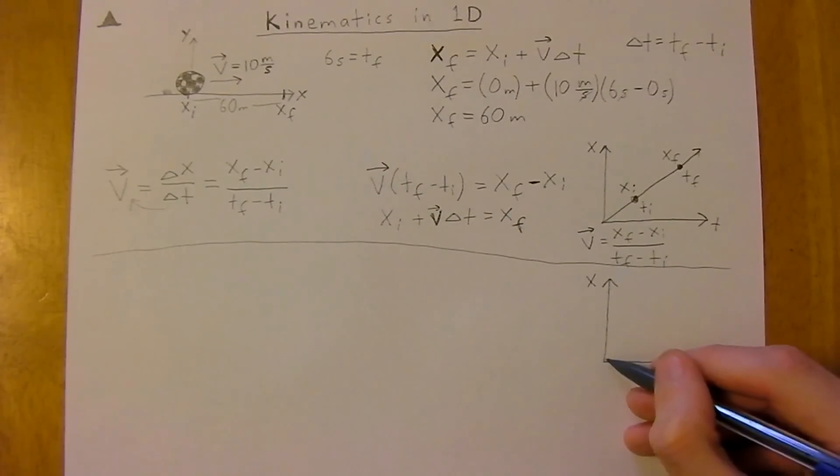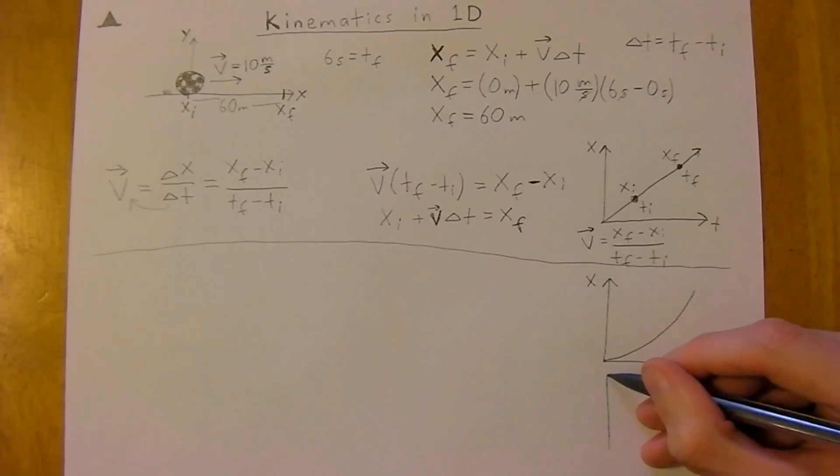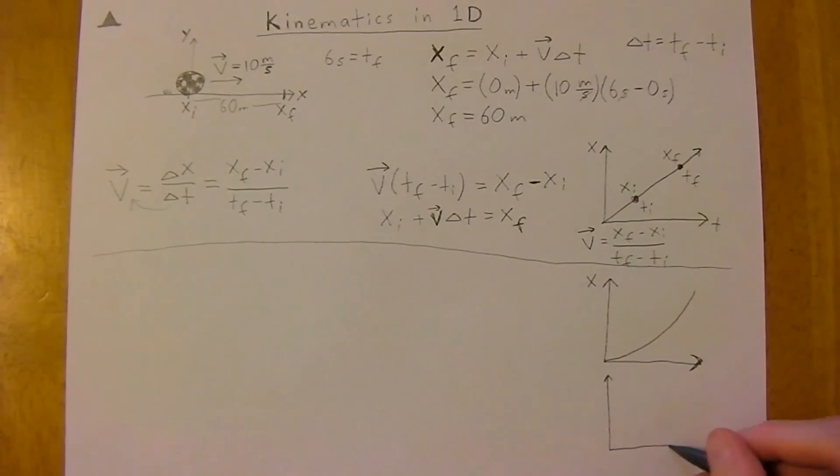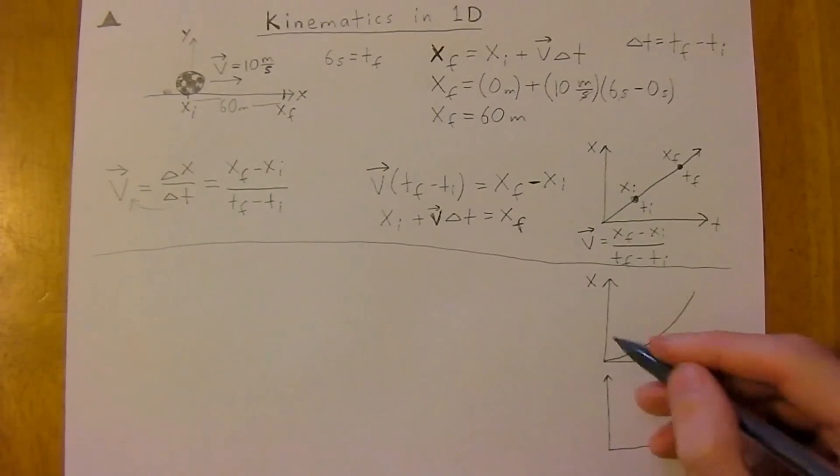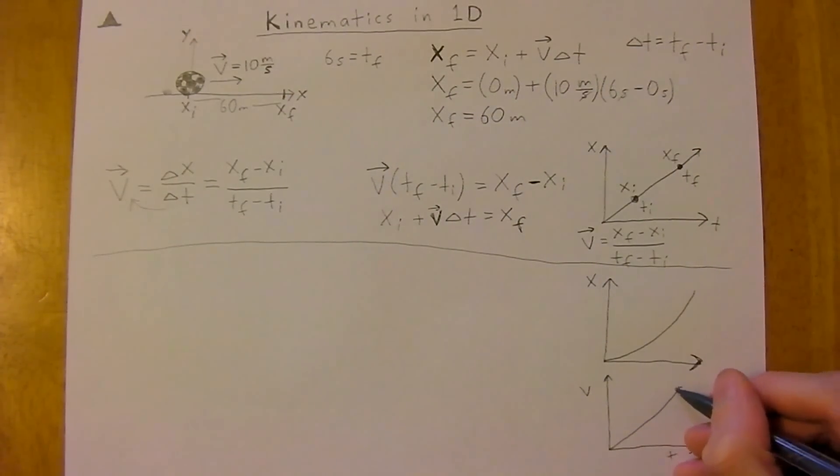So in this case, your displacement versus time graph looks something like this, but your, it'll be a parabola, but your velocity versus time will come up like this.